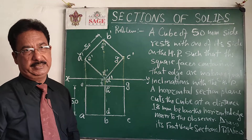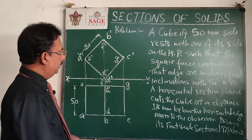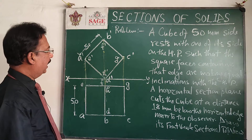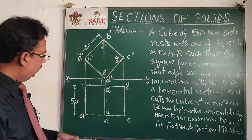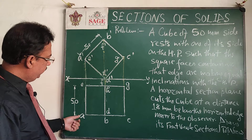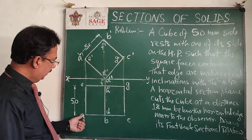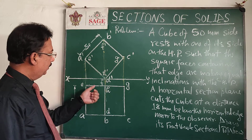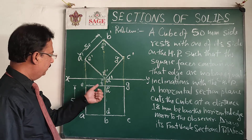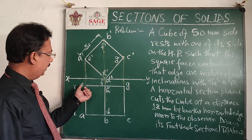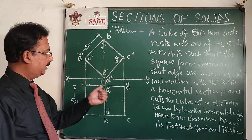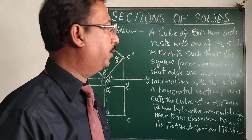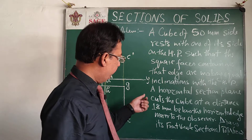The naming continues: d' h', keeping this side on the HP — that is side d' h'. The top view will be a rectangle: ABCD will be the lower base, or the front face, and EFGH will be the other face. This is the complete position of the solid.